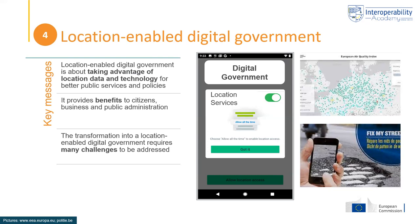The fourth module brought together the previous three modules to talk about location-enabled digital government — a government that fully takes advantage of location data and technologies for improving its public services and policies. Through different examples, we showed how this results in benefits to citizens, businesses, public administrations, and society as a whole. We also presented the many challenges that need to be addressed — it's not only about integrating location data, transformation, or interoperability; other challenges such as ethical aspects must also be taken into consideration and further explored.